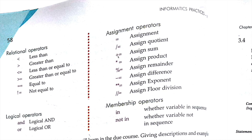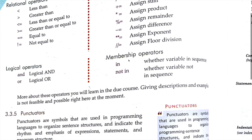Logical operators are AND and OR. Assignment operators include equal to (assign), plus-equal-to (assigned sum). For example, a = [1, 2, 3] means you have assigned those values to a — this is an example of an assignment operator. Membership operators are 'in' and 'not in' — whether a variable is in a sequence or not. Remember these operators, as they will be repeated in later chapters.